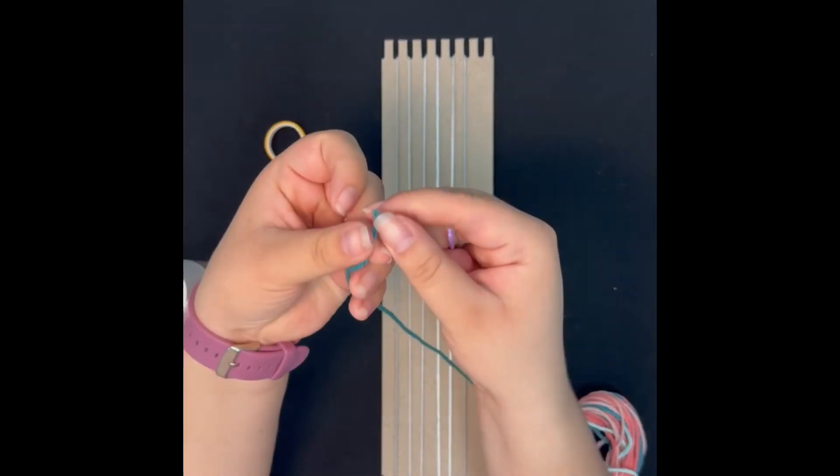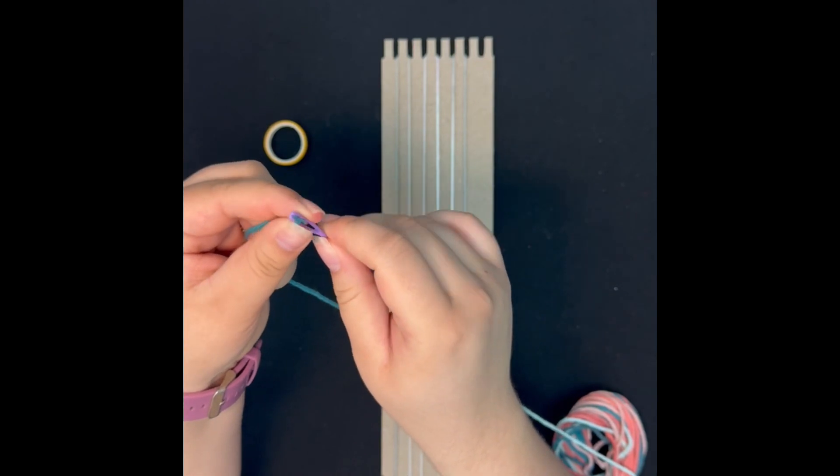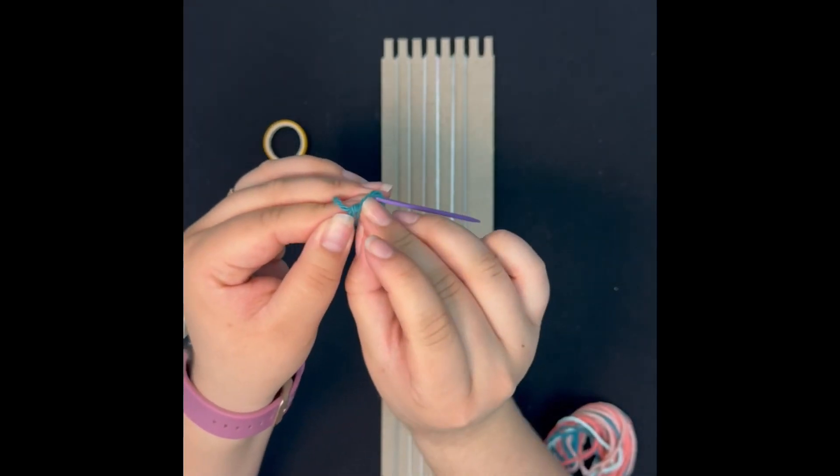The next step is to thread your needle. I went ahead and double knotted it to make sure it wouldn't unravel in the weaving process.